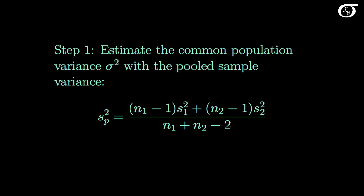Since the population variances are assumed to be equal, we pool the sample variances together to get a single estimate of the population variance. This sp squared is our pooled sample variance, and it estimates the common population variance sigma squared. The pooled variance is a weighted average of the two sample variances — it will be between the individual sample variances, but closer to the one that has more observations.